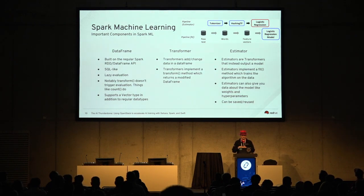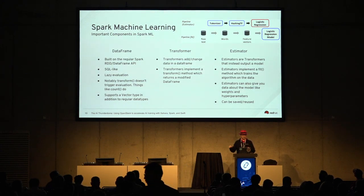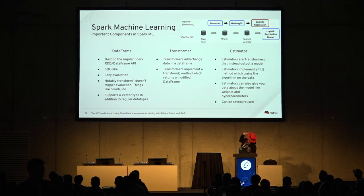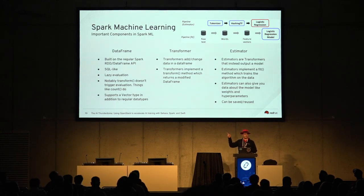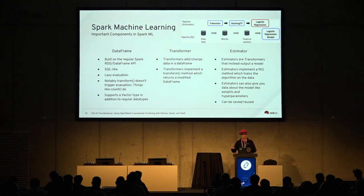Finally, pipelines, as shown in the image, just comprise a set of transformers and estimators. It takes your raw text, tokenizes it, hashes it, and then passes it to the TensorFlow component. The TensorFlow component returns the trained model at the end.